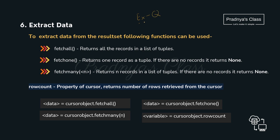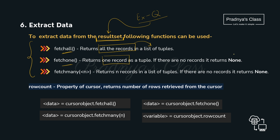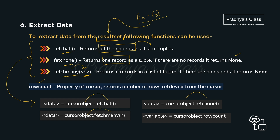After execution of the query we will get the result set, meaning we will get the records. There is a category of fetch functions which decide how many records you want. The first is fetchall — it fetches all records in the form of a list of tuples. If you don't want all records, there is fetchone — it fetches only one record, and if there are no records it returns None. There is also fetchmany(n) with which you can extract a specific number of records, where n is the number of records. These functions work with the cursor object. There is also a rowcount property of the cursor object which counts the number of rows retrieved.